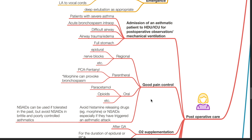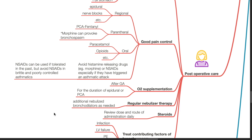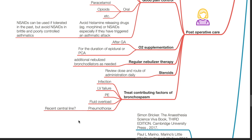Good pain control such as the use of regional, parenteral and oral methods are advisable. Regional techniques include epidural and nerve blocks. Parenteral techniques such as PCA fentanyl — avoid morphine which can provoke bronchospasm via histamine release. Oral analgesia includes paracetamol and opioids. Avoid histamine-releasing drugs and NSAIDs, especially if they have triggered an asthmatic attack in the past. NSAIDs can be used if tolerated in the past, but avoid NSAIDs in brittle and poorly controlled asthmatics. Oxygen supplementation should be provided after general anesthesia and for the duration of epidural or PCA. Regular nebulizer therapy and additional nebulized bronchodilators may be needed. Review steroid dose and route of administration daily. Treat contributing factors of bronchospasm aggressively such as infection, left ventricular failure, pulmonary embolism, fluid overload and pneumothorax.